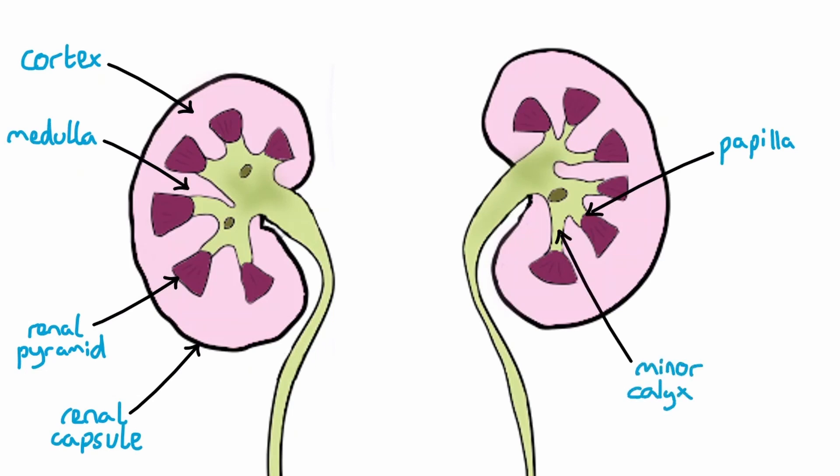Multiple minor calyces combine to form a major calyx, which, in turn, drains into the renal pelvis.